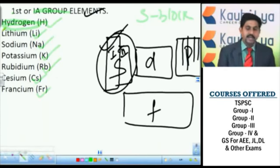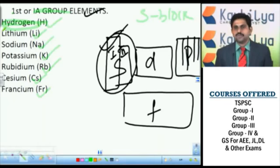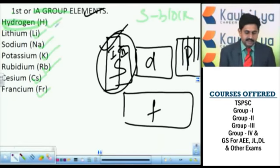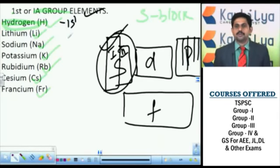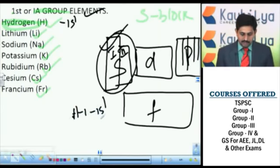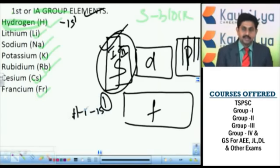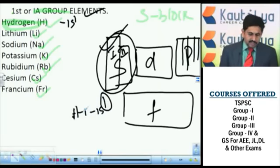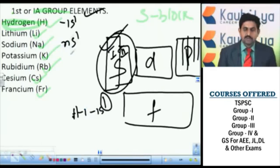One important thing to remember is that hydrogen is not actually considered a true first group element, but we include it here because it has one electron in its outermost orbit. The atomic number of hydrogen is 1, and its electronic configuration is 1s¹, so it has one electron in the outermost orbit.